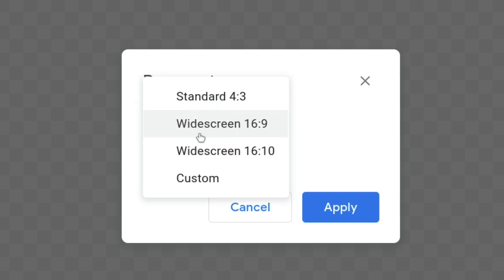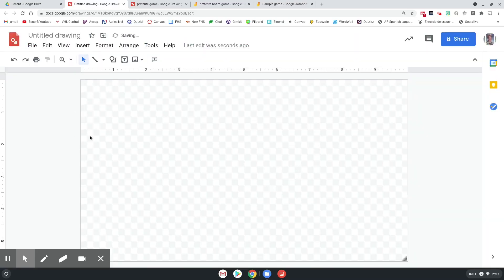And then change it to the widescreen 16x9. By default, it'll show you 4x3. We're going to make it 16x9, hit Apply, and then you'll see it change a little bit. The reason we're going to do that is because it fits the Jamboard better.